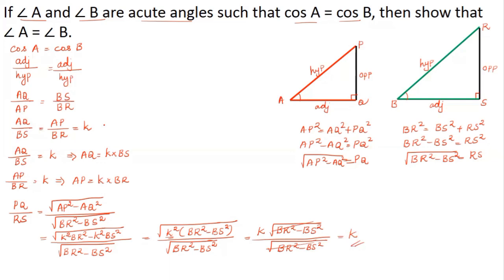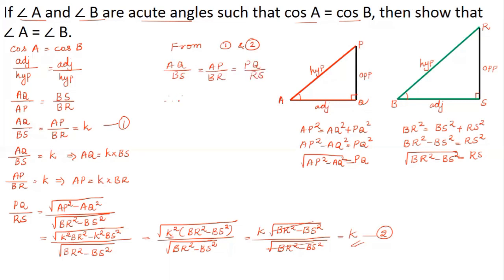We got PQ divided by RS is equal to K, and we have AQ divided by BS equal to AP divided by BR equal to K. So from these results, AQ/BS equals AP/BR equals PQ/RS, meaning corresponding sides are in proportion in triangle AQP and triangle BSR. Therefore, triangle AQP is similar to triangle BSR according to the SSS criteria, and therefore angle A is equal to angle B, as corresponding angles are equal.